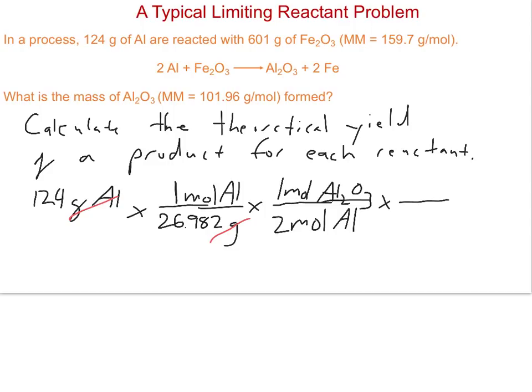Since the question is asking us for a mass of aluminum oxide, we'll go ahead and calculate the mass. One mole of aluminum oxide weighs 101.96 grams. If I do my math correctly, I get 234.3 grams of aluminum oxide. Based on sig figs, we have three sig figs in our mass.